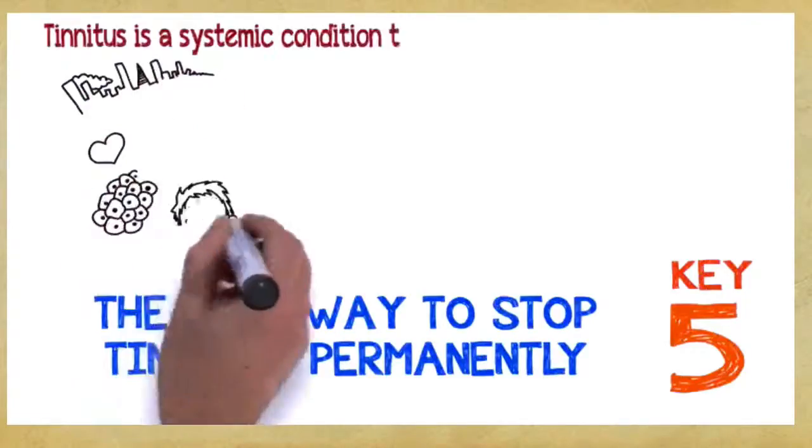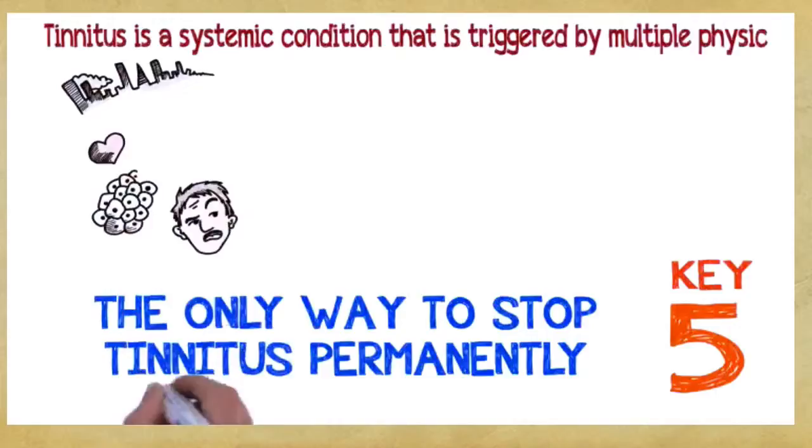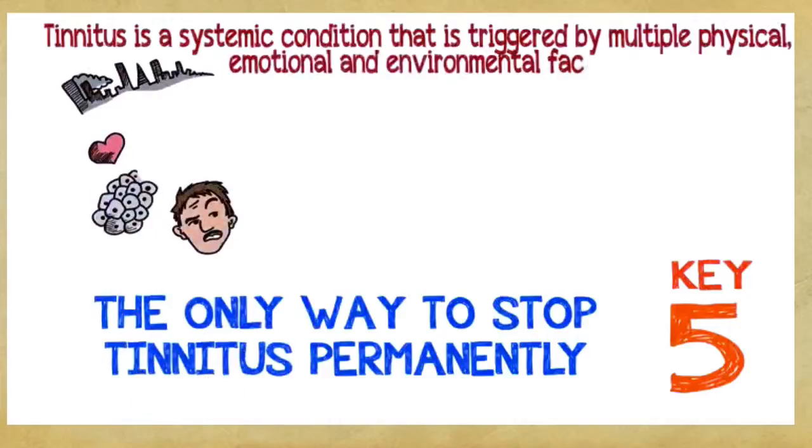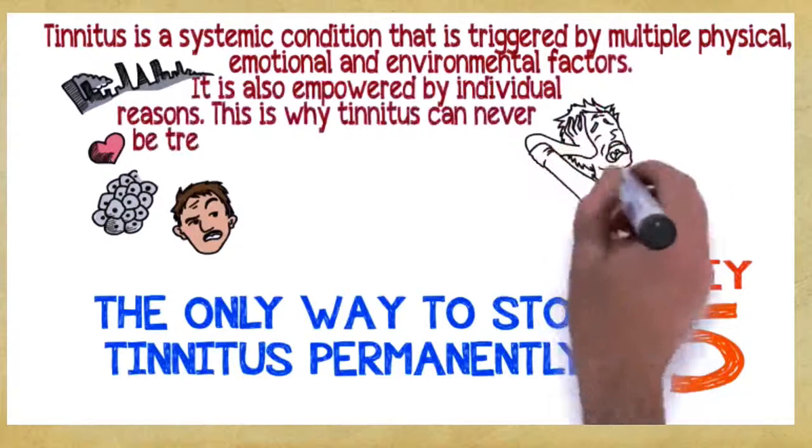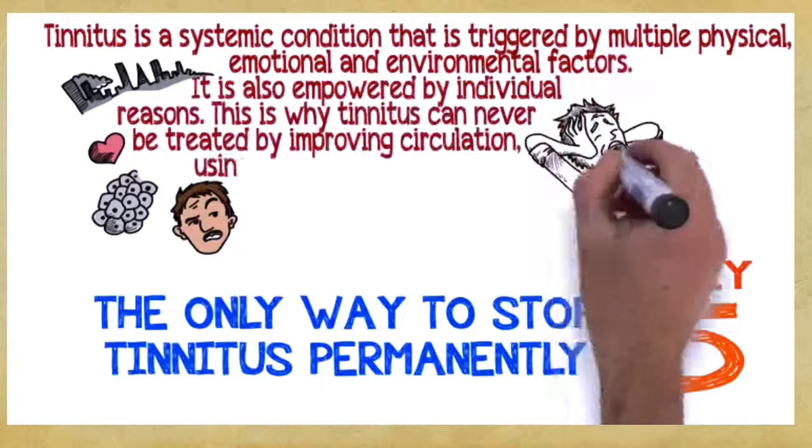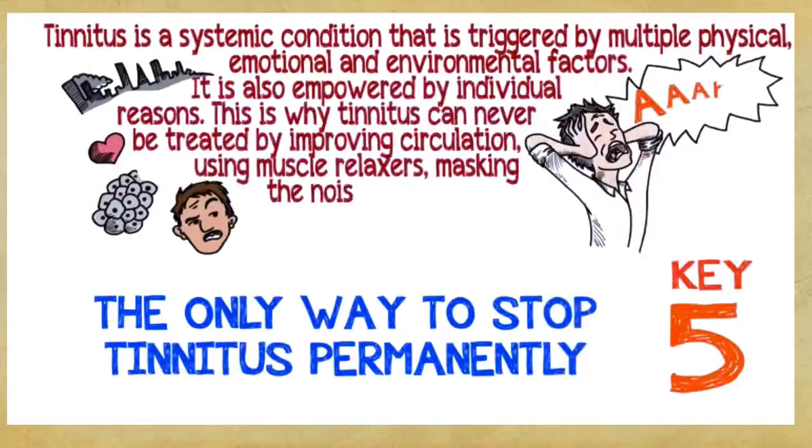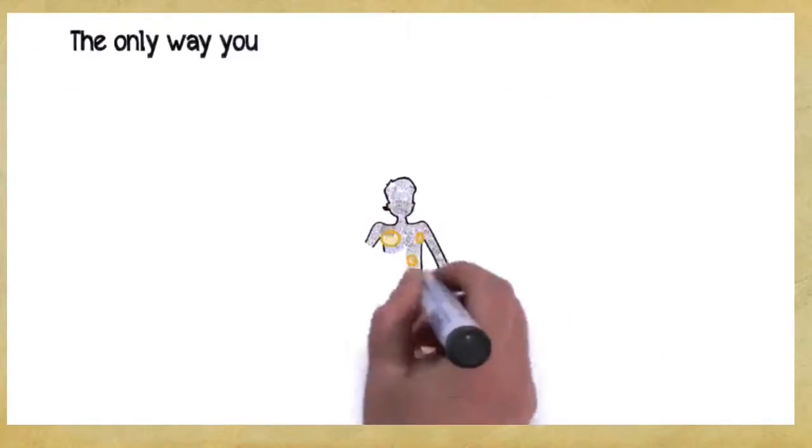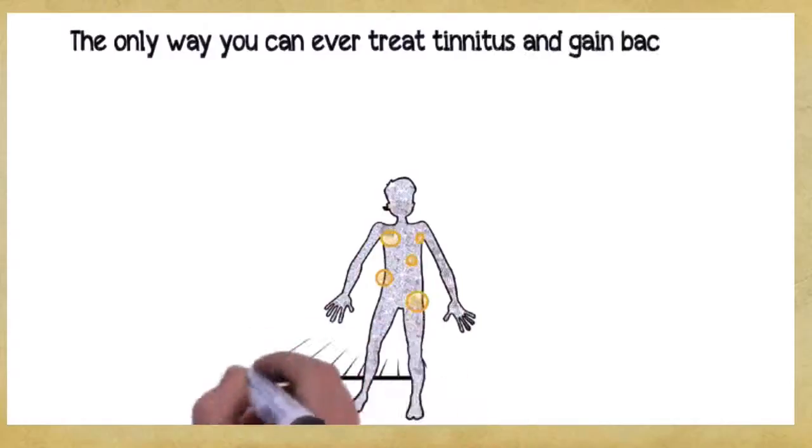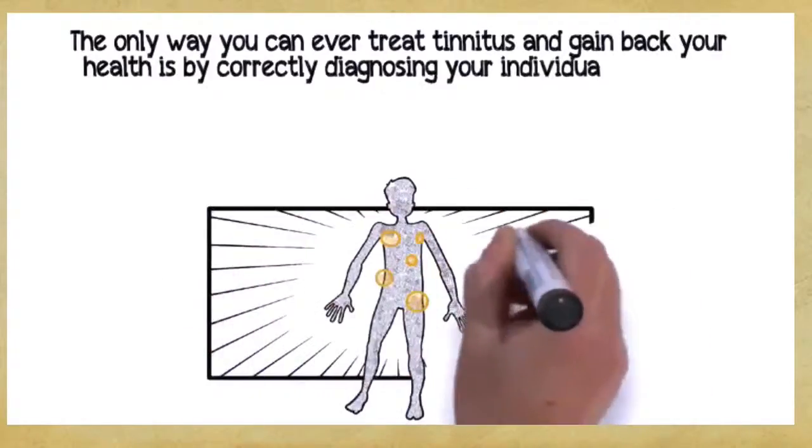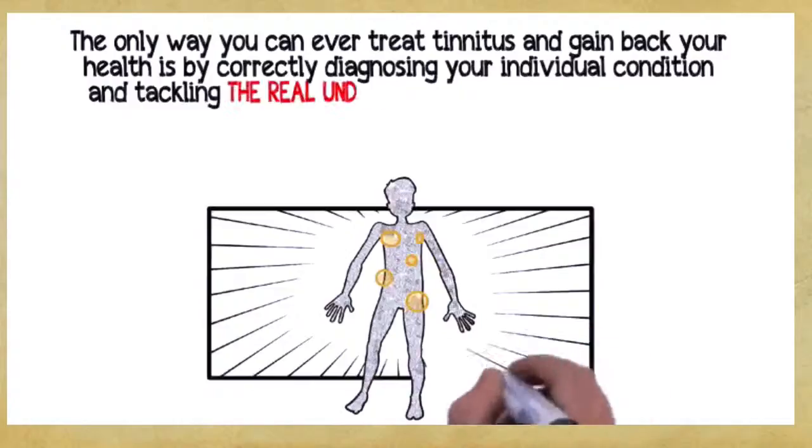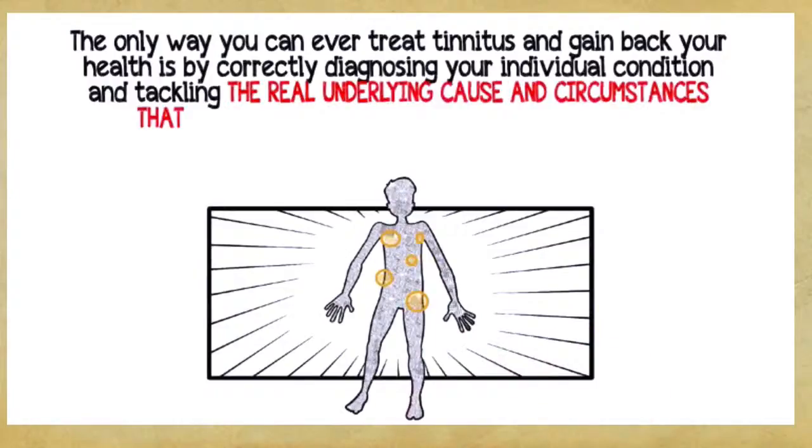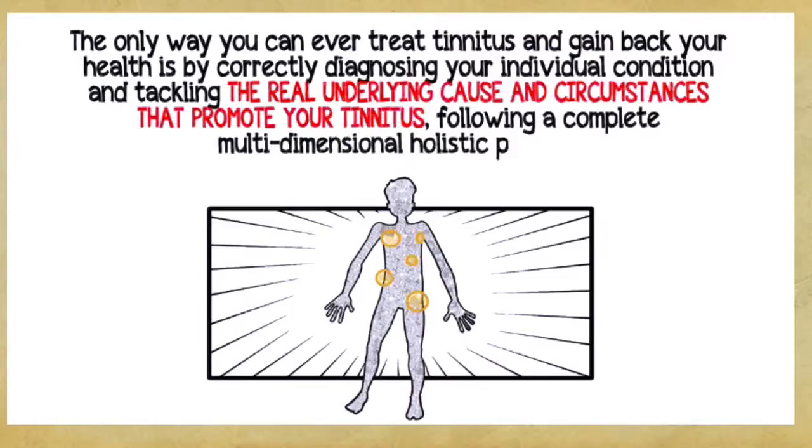Key number five: The Only Way to Stop Tinnitus Permanently. Tinnitus is a systemic condition triggered by multiple physical, emotional and environmental factors. This is why tinnitus can never be treated by improving circulation, using muscle relaxers, masking the noise or cutting a nerve. The only way you can treat tinnitus is by correctly diagnosing your individual condition and tackling the real underlying cause, following a complete, multi-dimensional, holistic program.